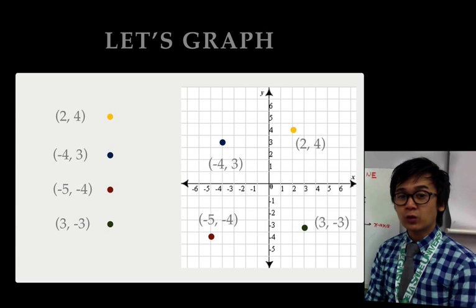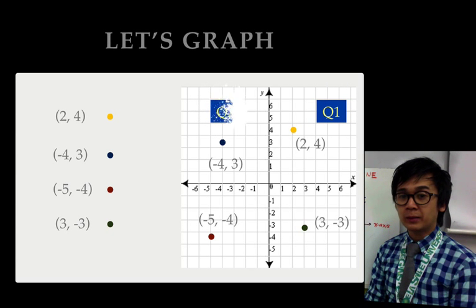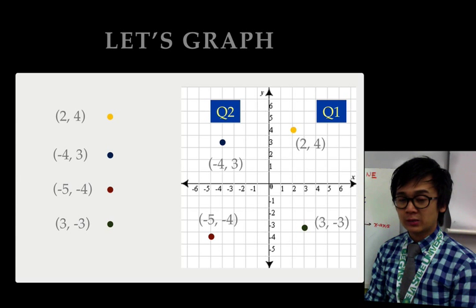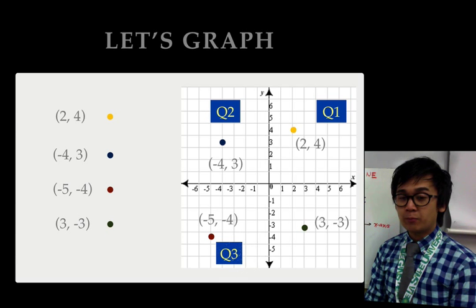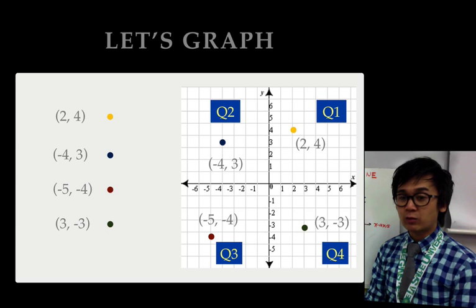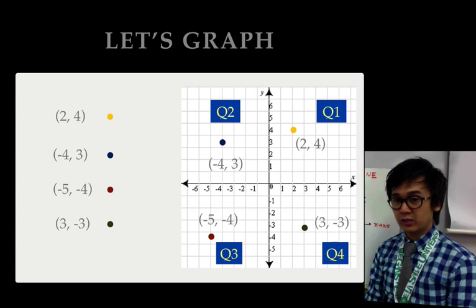The quadrants for each particular point: for our first point, represented by the yellow dot, it's in quadrant 1. The other point, which is (-4,3), will be in quadrant 2, because the x is negative and the y is positive. The third point, both of them are negative, so it's in quadrant 3. And the last point that we have, which is (3,-3), lies under quadrant 4.